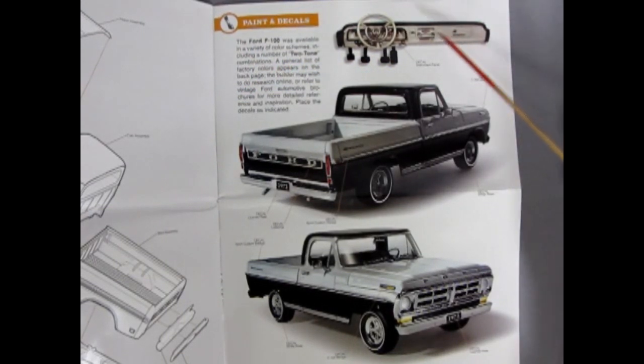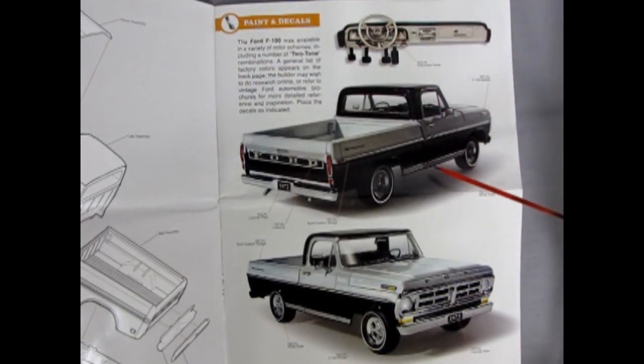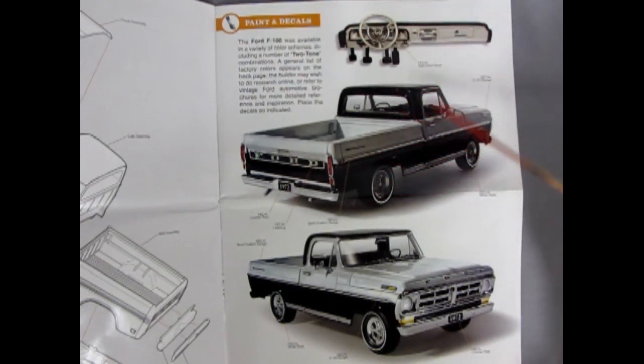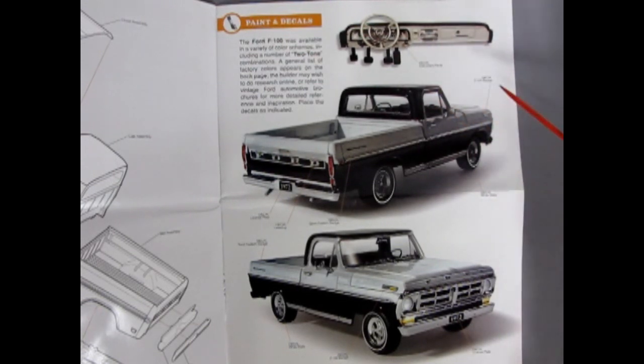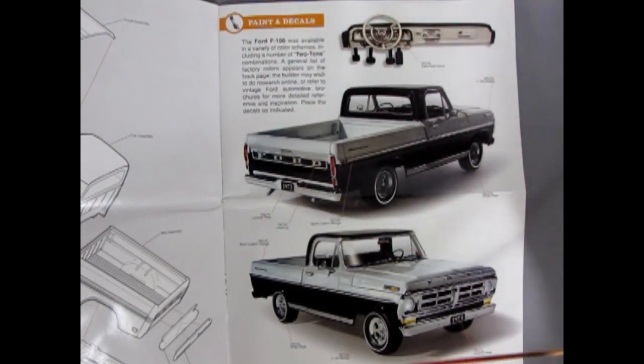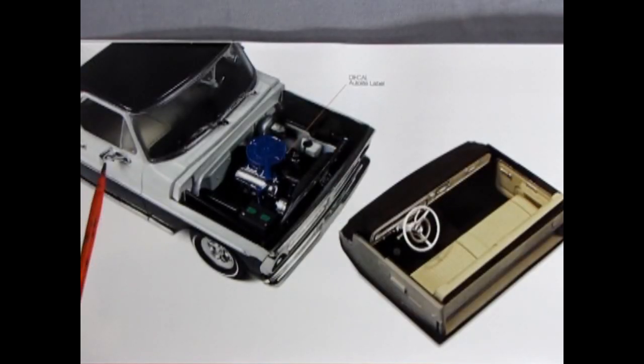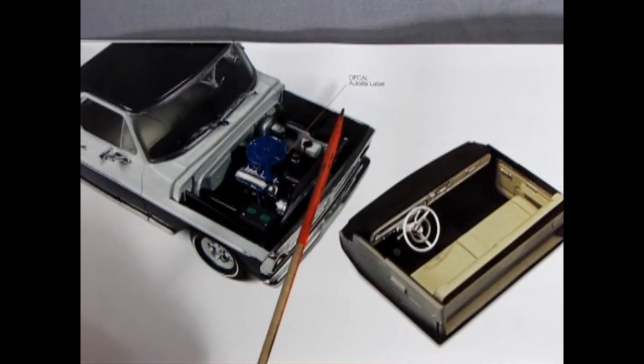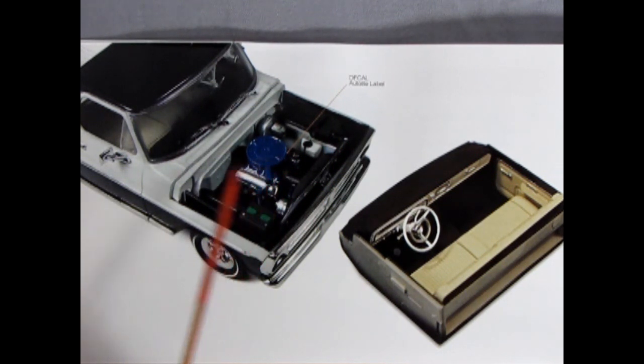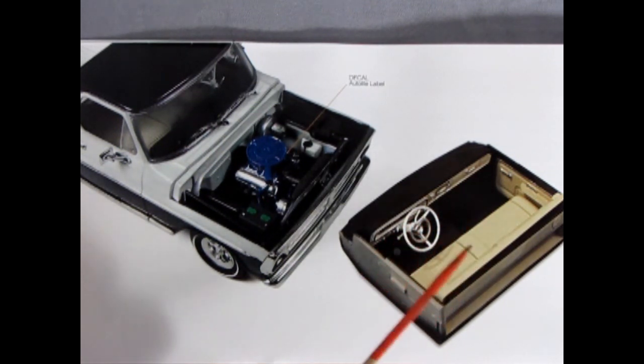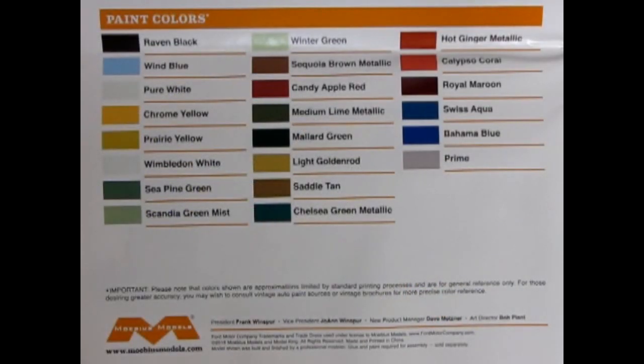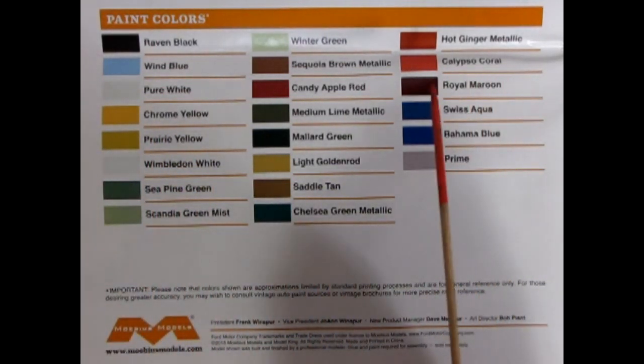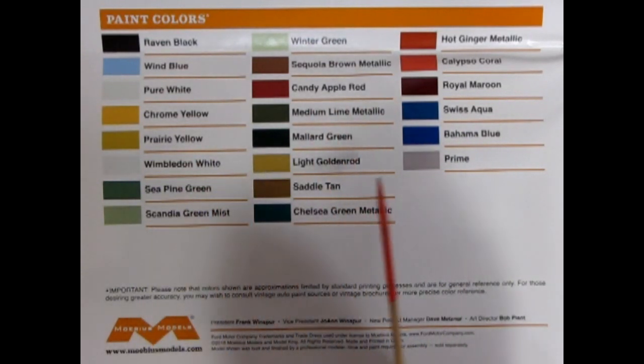And here Mobius has given us some paint suggestions and as you can see we've got a black along the bottom and a light silver gray up top as well as a black roof. And here's all our decal placements on the dashboard and the body, license plates and everything else. And here we have a nice photograph of our decal for our Autolite label which goes in on our air cleaner. You can also see the nice interior paint scheme that they've given this model. Finally Mobius has given us a paint color chart in actual color so that we can see all the options that came in the 1972 Ford Sport Custom pickup truck.